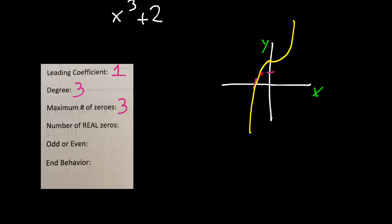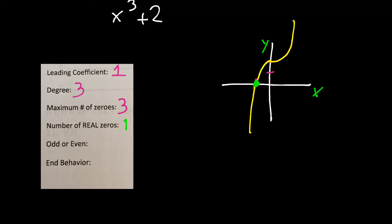Looking at the yellow line, we notice it crosses the x-axis right here — just once — giving us our one and only zero. So there is only one real zero. We could also have two imaginary or complex zeros, but we're not going to talk about those. So the number of real zeros is just one.